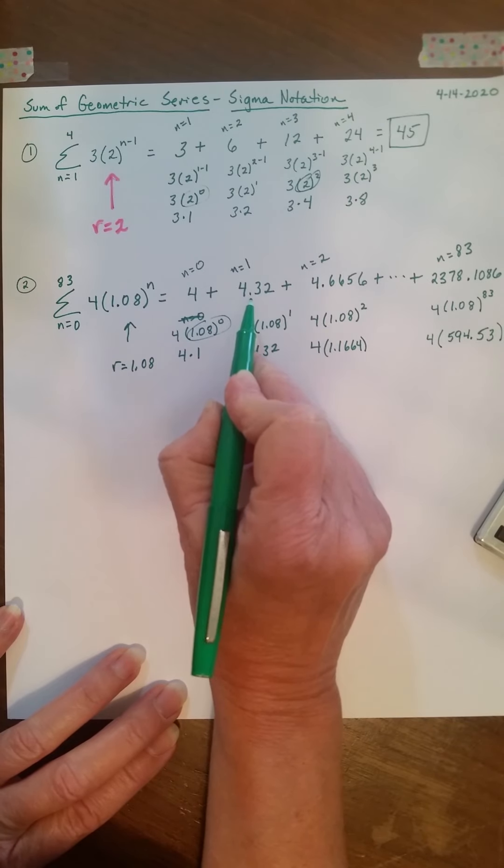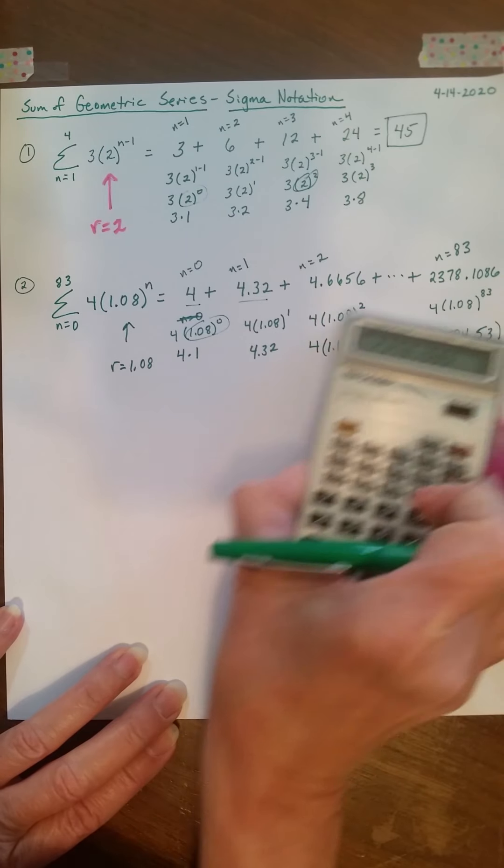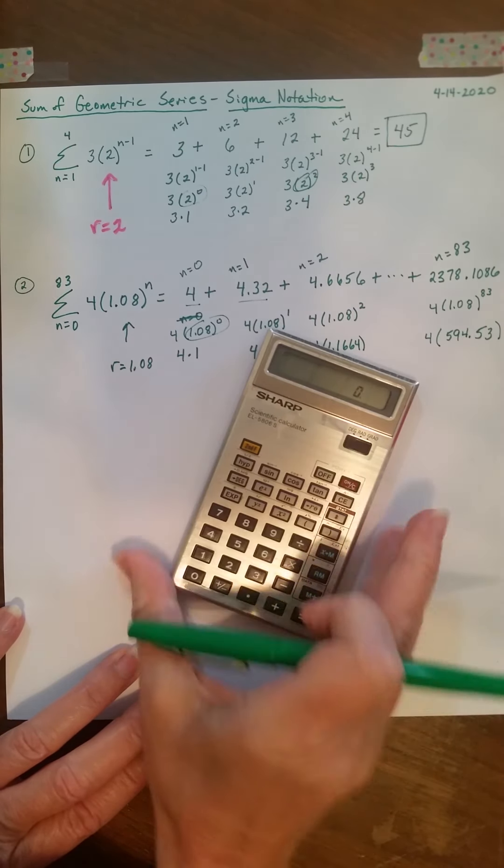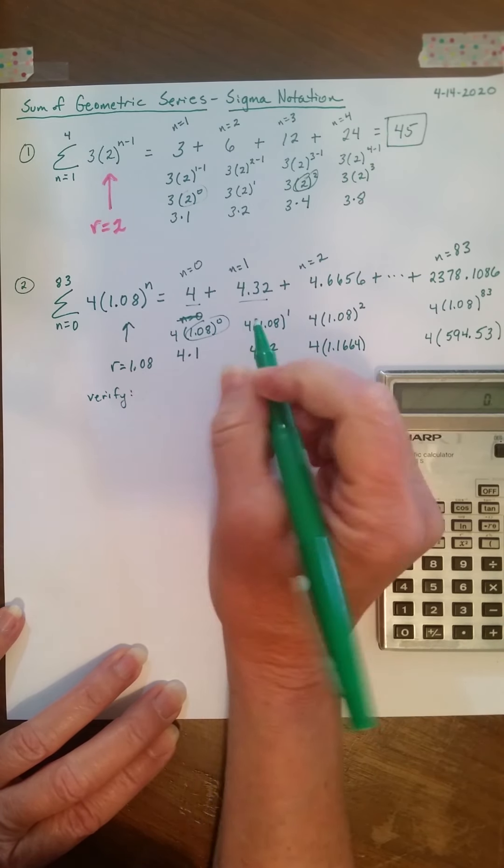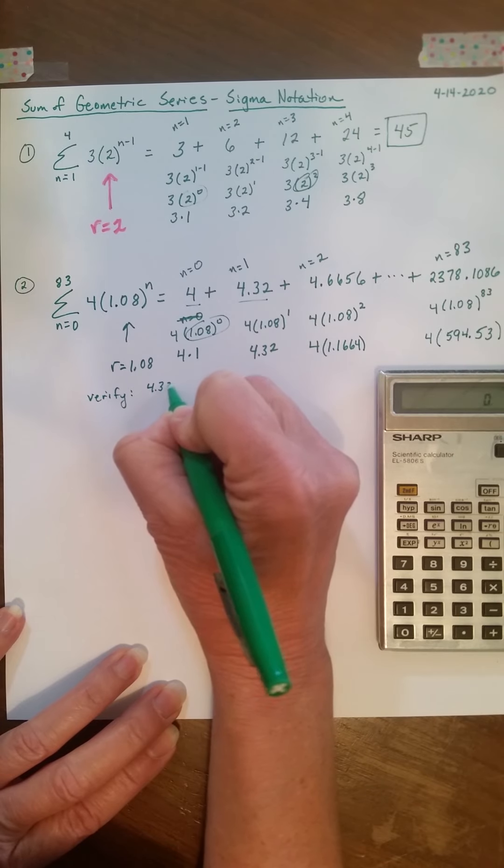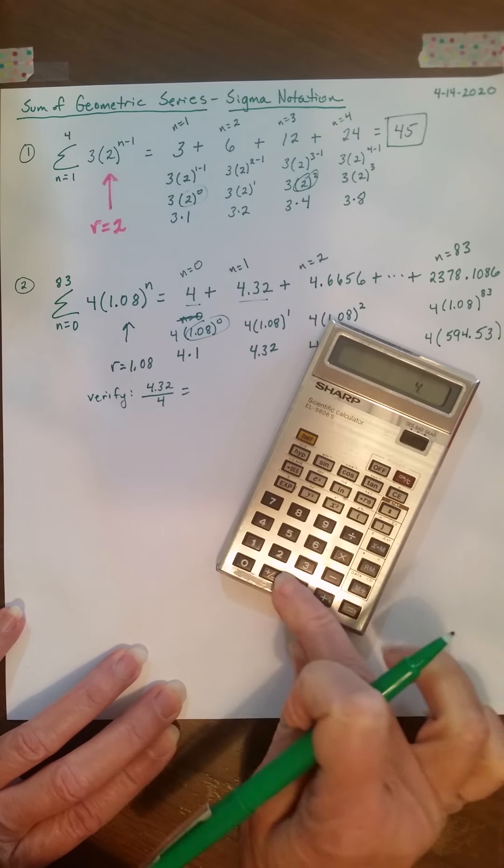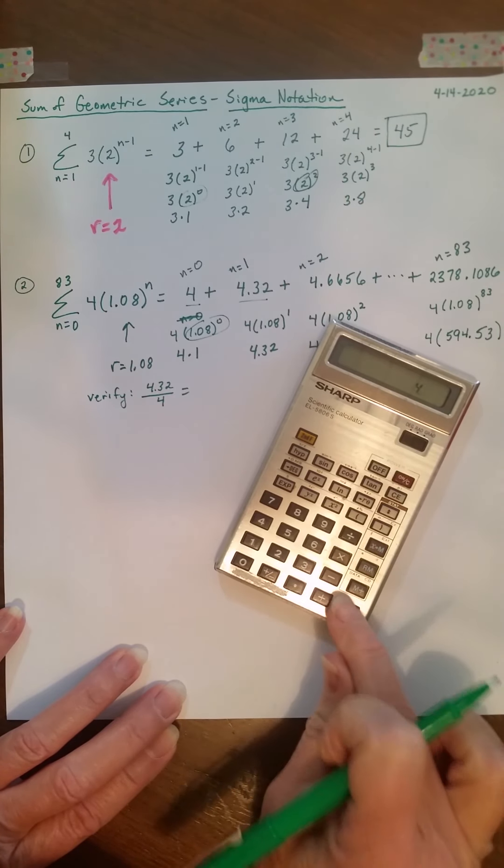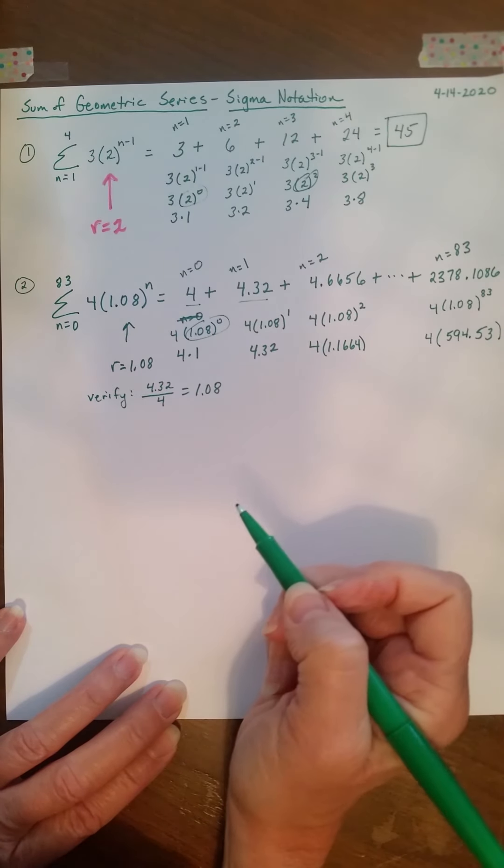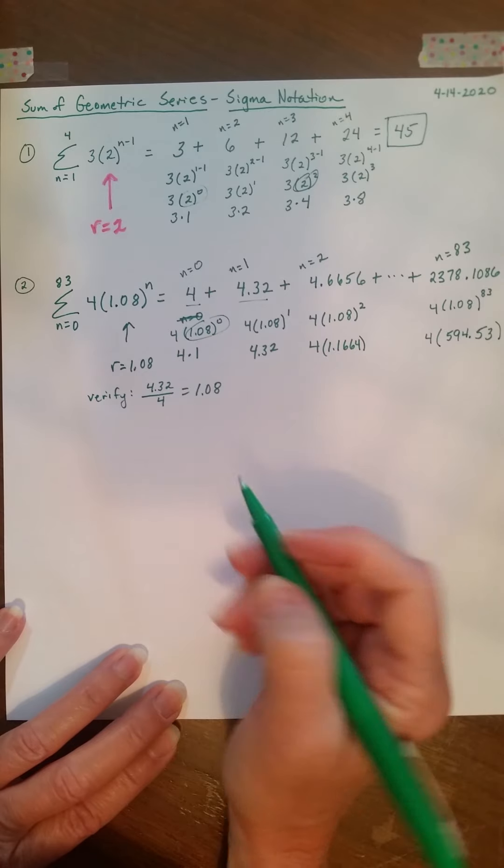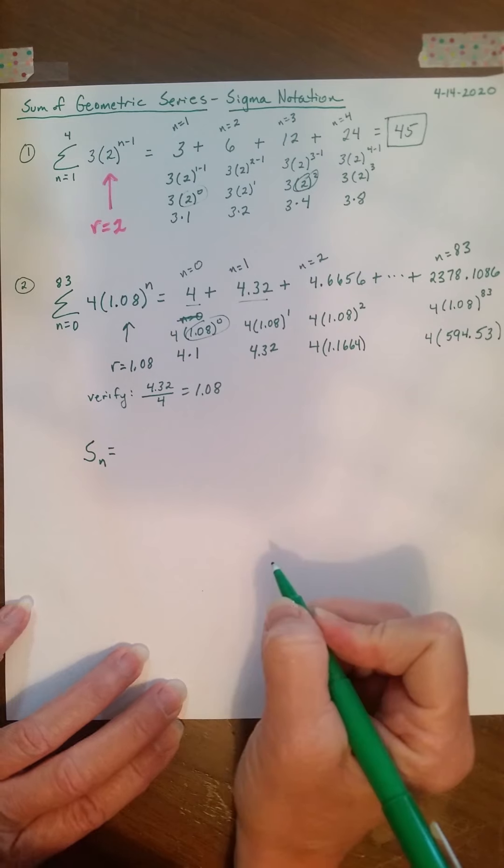And you can verify that if you want, by taking the 2nd term divided by the 1st. Remember, we can always find the ratio doing that. So, if I do, so I'm going to verify by taking my 2nd term, 4.32, divided by my 1st term, 4. And I get 4.32, divided by 4. And I get 1.08. Okay, now, this would be a lot of terms to add up. So, what I'm going to use is the sum of the first n terms of a geometric series.